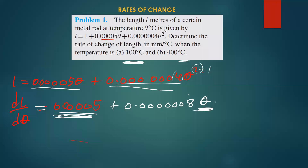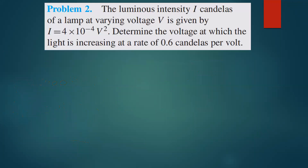This one is straightforward, so we move on to the next one. The luminous intensity I candelas of a lamp at varying voltage V is given by I = 4 × 10⁻⁴ V². They're asking us to determine the voltage at which the light is increasing at the rate of 0.6 candelas per volt.